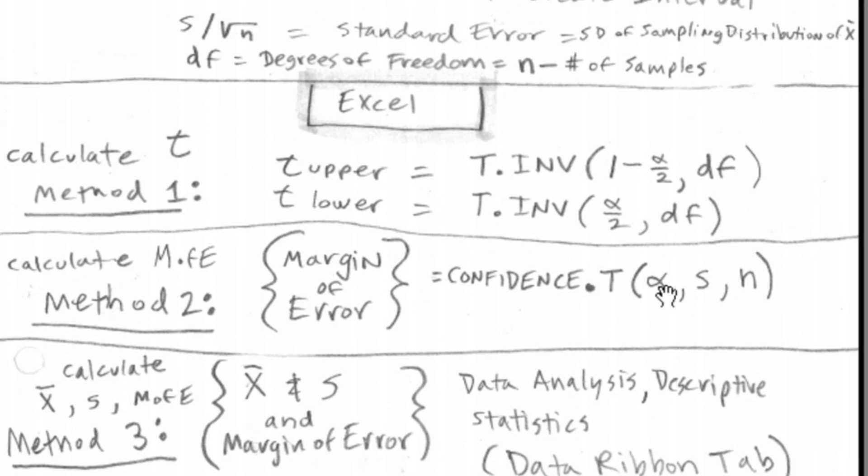In Excel, we're definitely not going to use the norm functions. We're going to be using the t functions. So last video, we used norm.inverse when we had the z-distribution. Here, when we have the t-distribution, we'll use t.inverse. Instead of confidence.norm for z, we'll use confidence.t. And we have a great, awesome option for when you have sample data. We use the data analysis descriptive statistics, and it'll calculate x-bar, s, and margin of error all automatically. So we'll see all three methods.